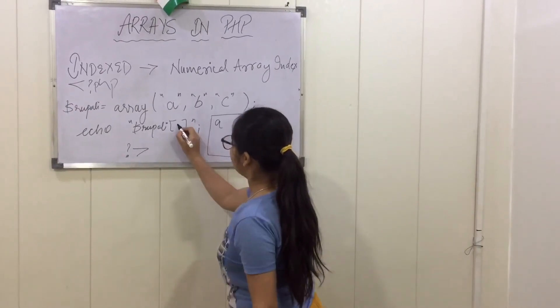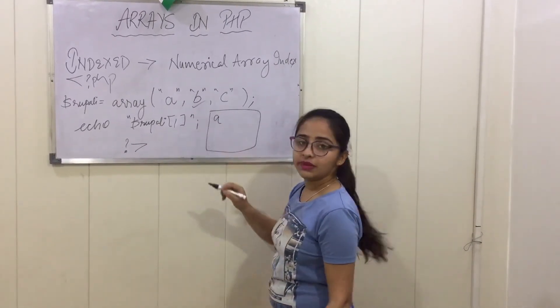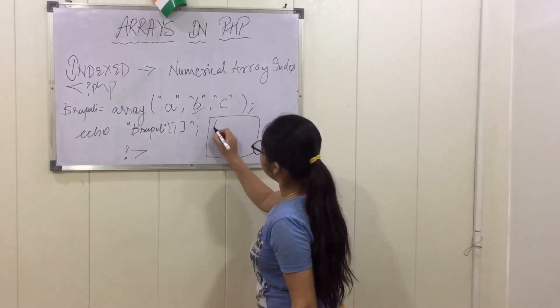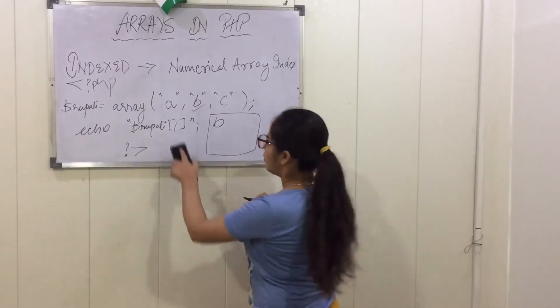Suppose if I have given here 1, then the second value will be conducted. So here it will be printed on the display screen, that is B, according to this.